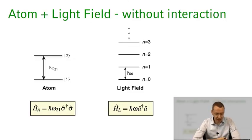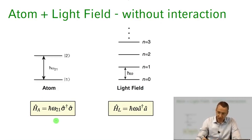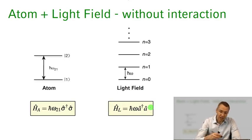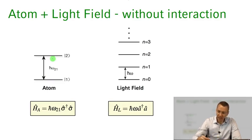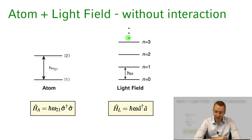So far we've treated the atomic system and the light field system independent from each other. We had the atomic Hamiltonian and we had the light field Hamiltonian. We could describe the states of these systems — the combined states — as a product state of the atom being in one of the states one or two, the ground state or excited state, and the light field being in any of the harmonic oscillator excited states with a defined photon number n going from zero to any photon number in the system.